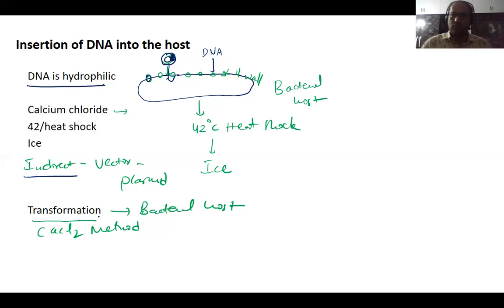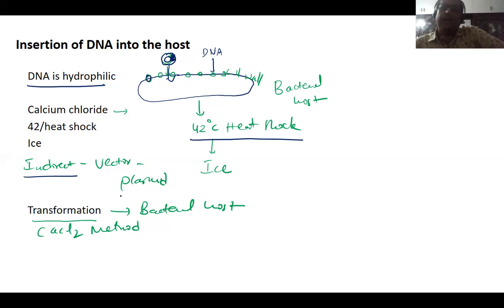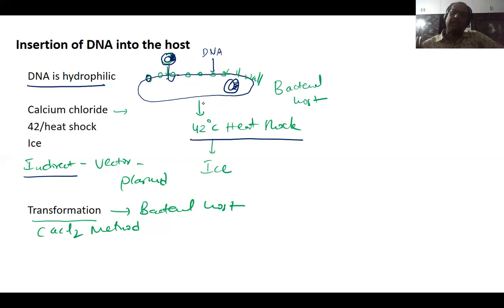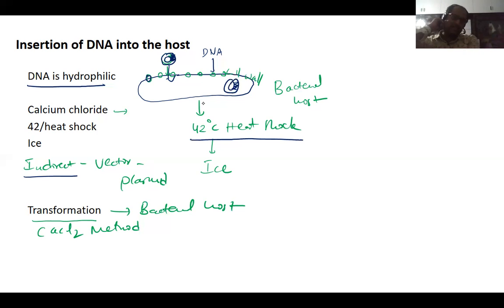After pore formation, we apply 42-degree heat shock. This heat shock causes the desired gene or vector to enter the bacteria. Then we apply sudden cooling by placing it in ice, and the vector will successfully get into the bacterial host.